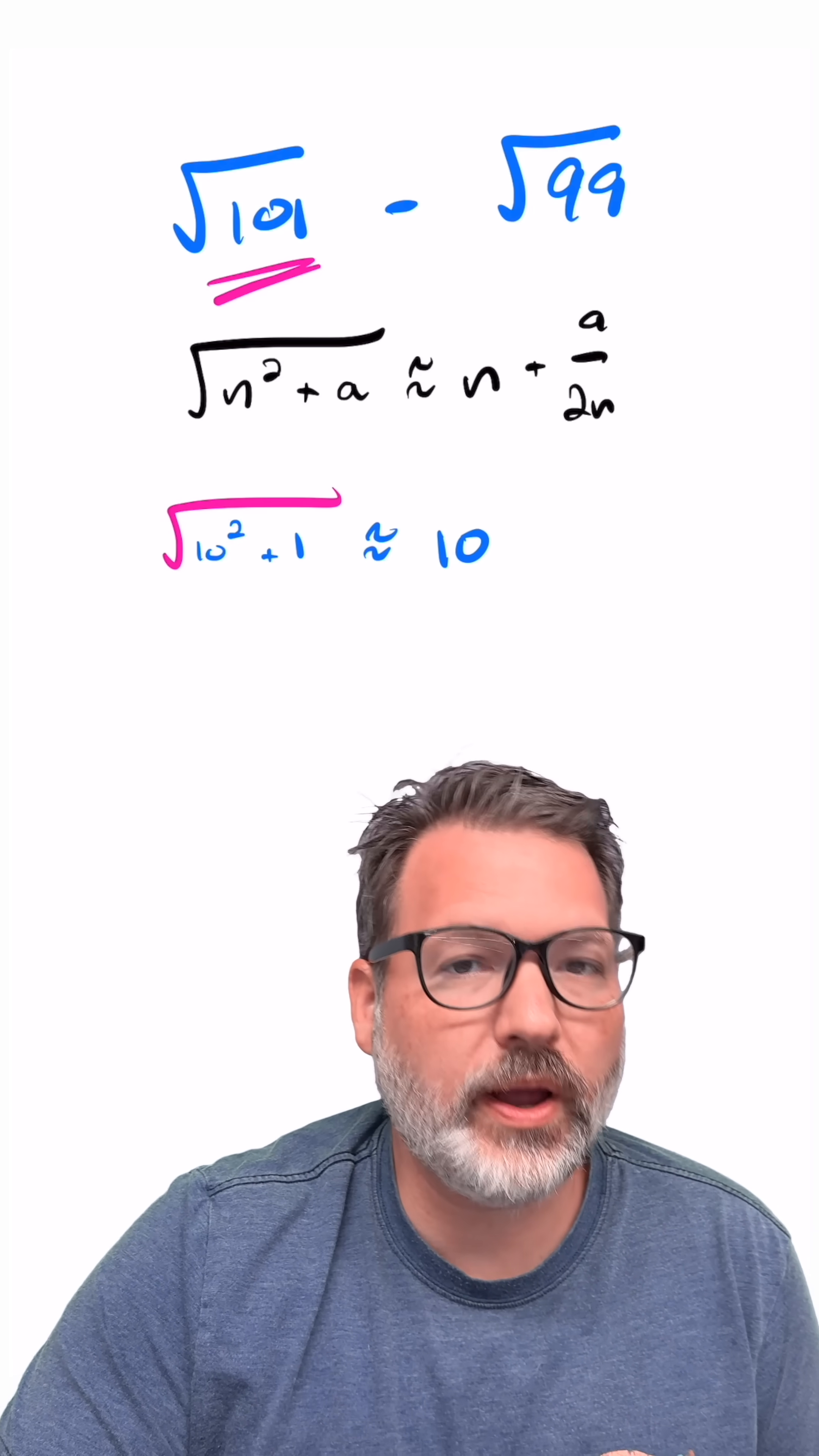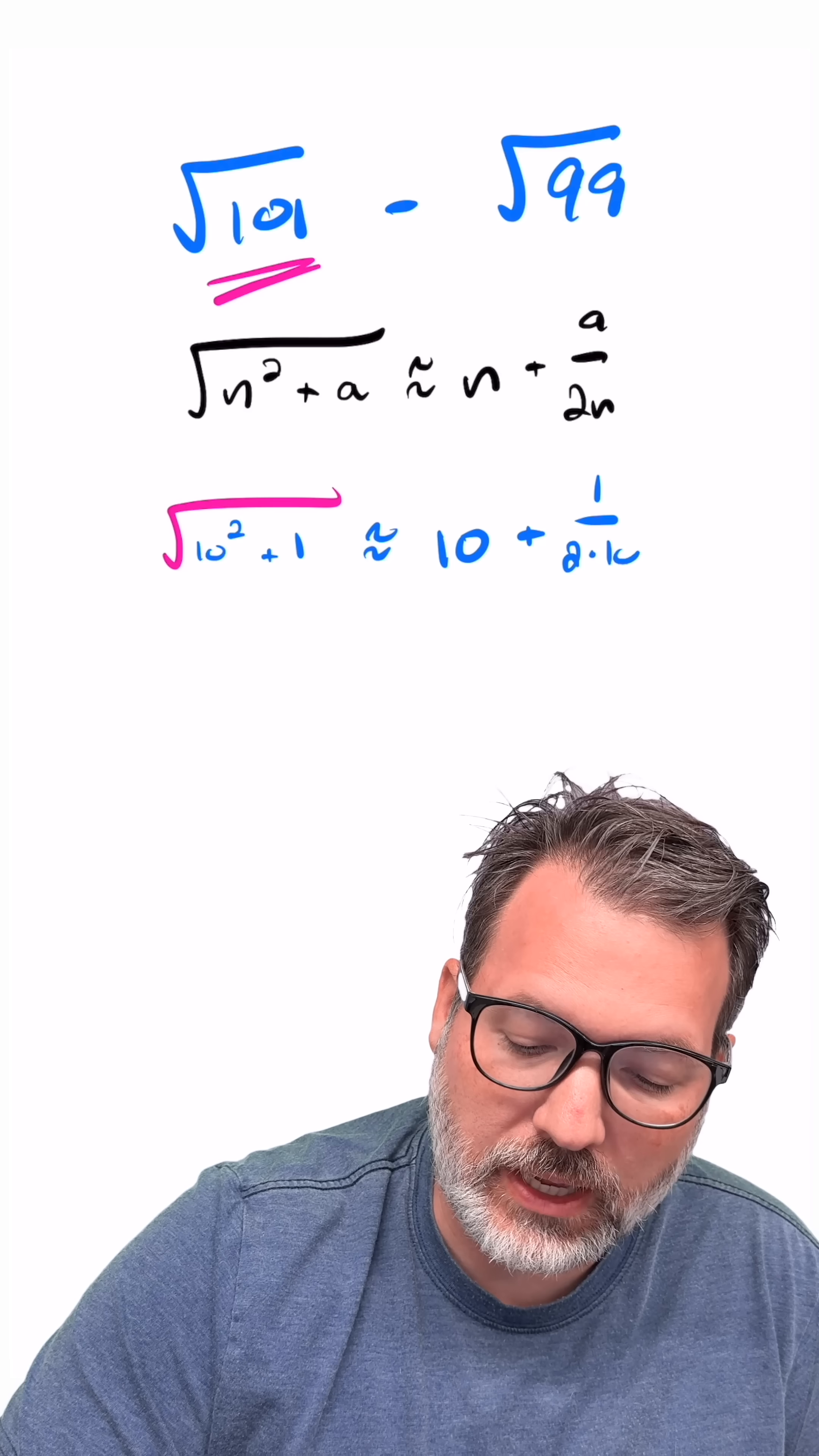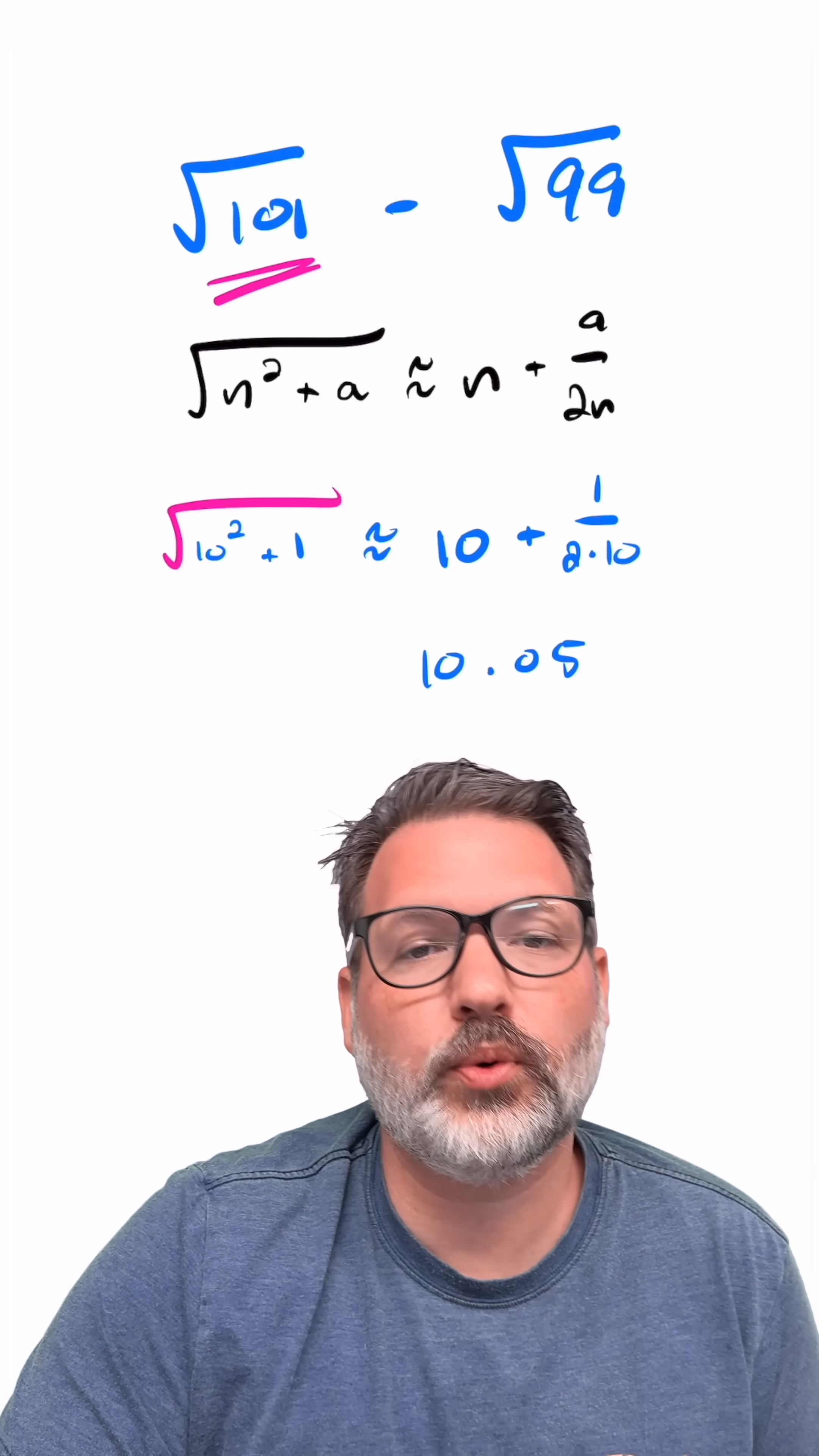to that number we would square to get the perfect square, in this case 10, plus 1, the value we were away from that perfect square of 100, divided by 2 times, again, that number 10, the number we're squaring to get our perfect square. Working this out here gives us 10 plus 1/20, or 10.05,